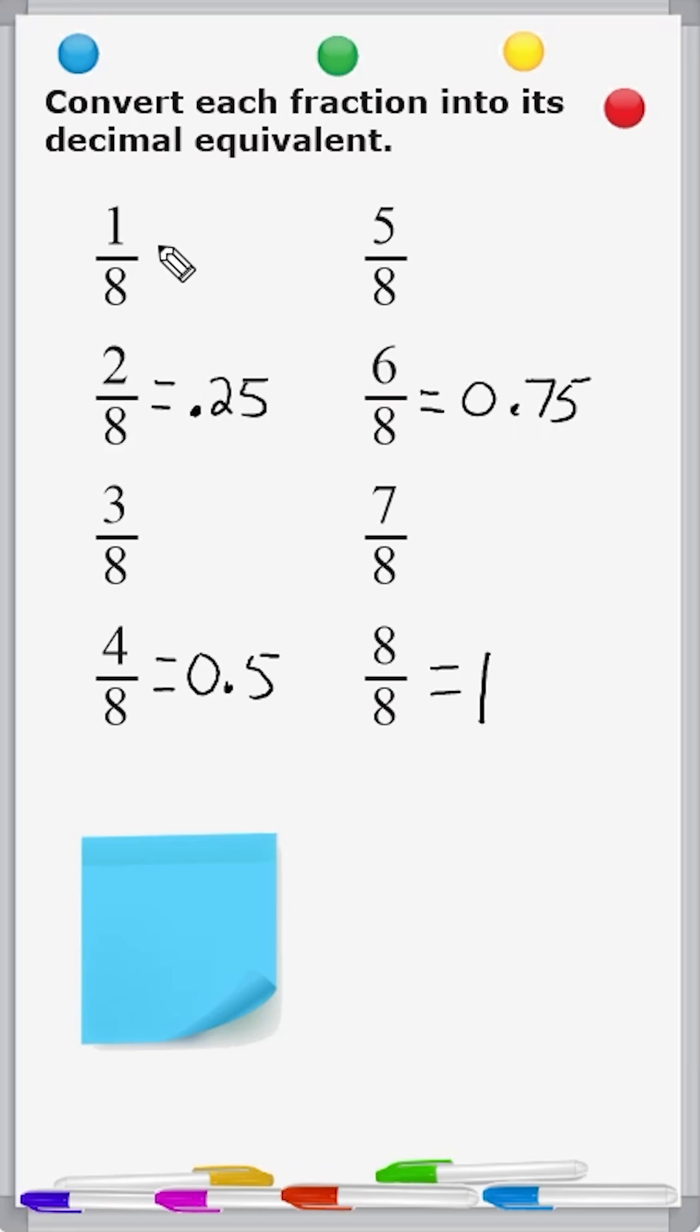Now, 1 eighth is half of 2 eighths, so what we're going to do is take 0.25 and cut it in half by sticking a 0 at the end to make it even. And half of 250 is 125, so 0.125 would be the decimal equivalent.